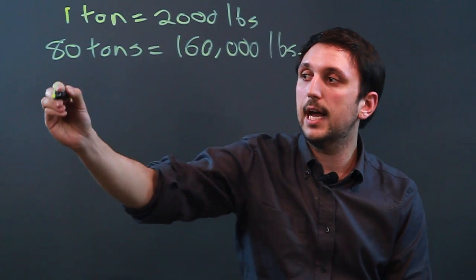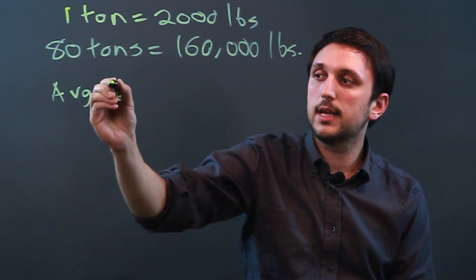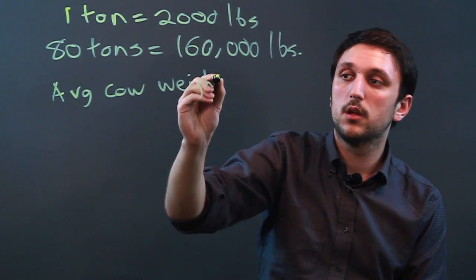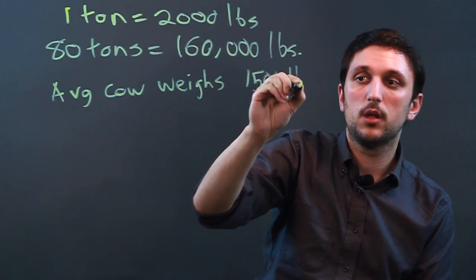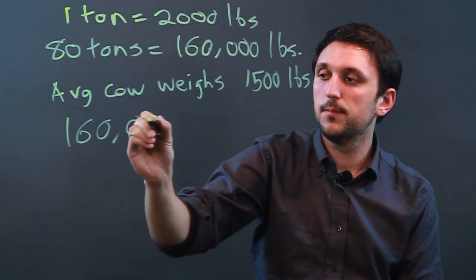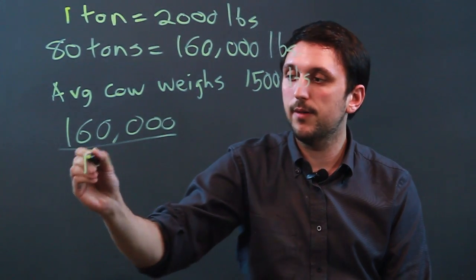Now if we say that the average cow weighs 1,500 pounds, we take the number 160,000 and we divide it by 1,500,